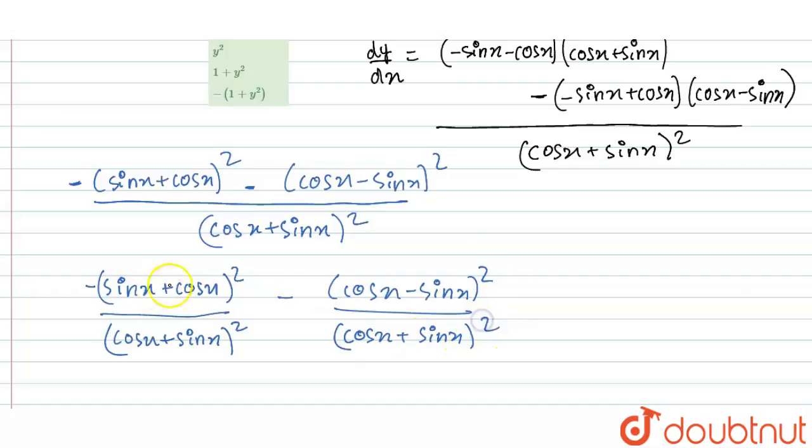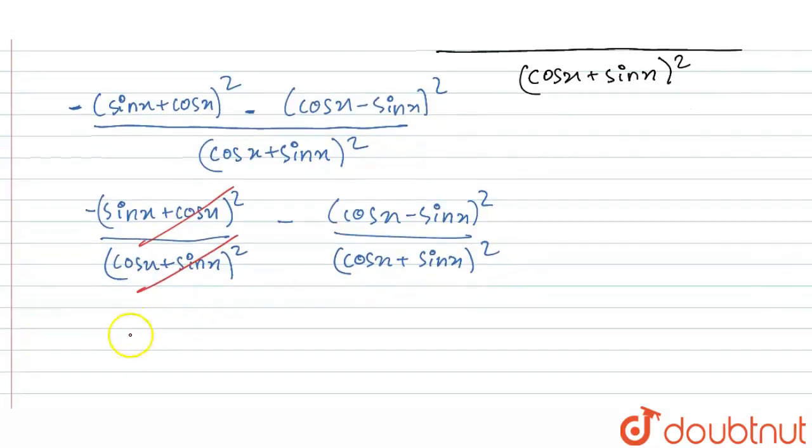just see that this is what we have. You can clearly see that this is getting cancelled out, and what we get is minus cos x minus sin x whole square upon cos x plus sin x whole square. But if you observe clearly